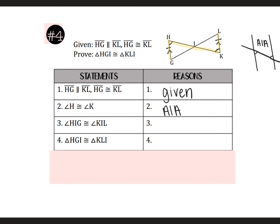The next line says angle HIG is congruent to angle KIL, and those are vertical angles. Now I have my three marks on each triangle. Remember, we don't count the parallel marks. If you look, I have two angles and a side, and it's angle, angle, side.